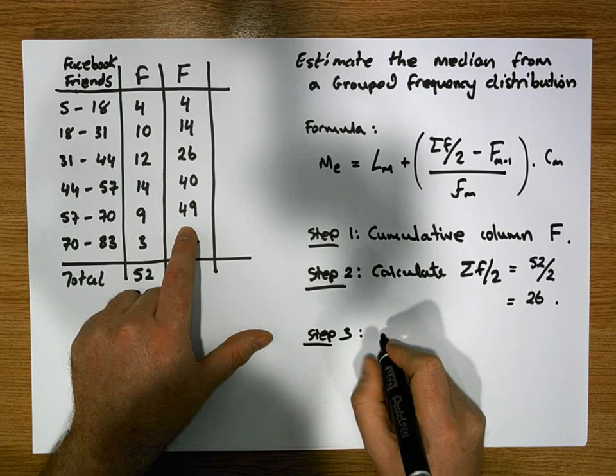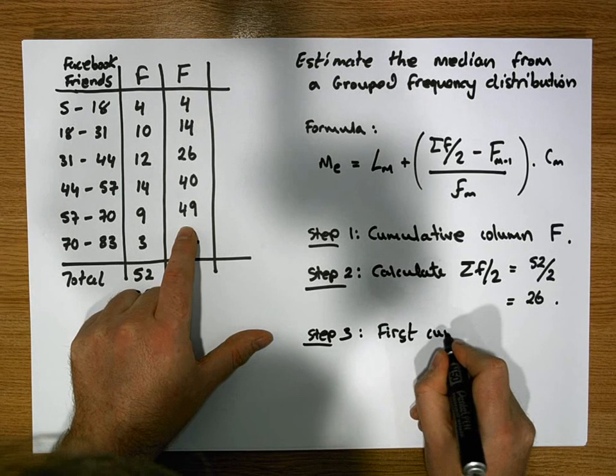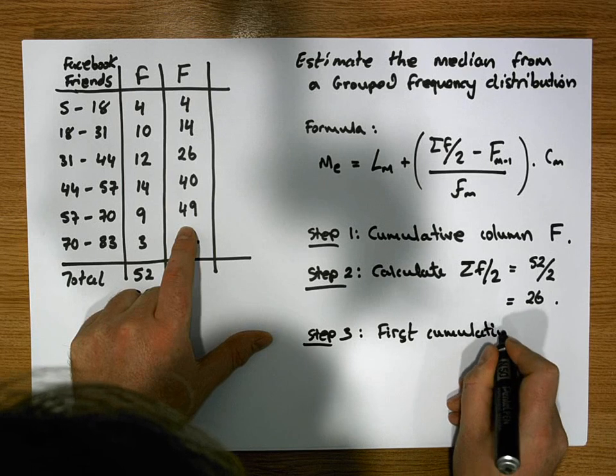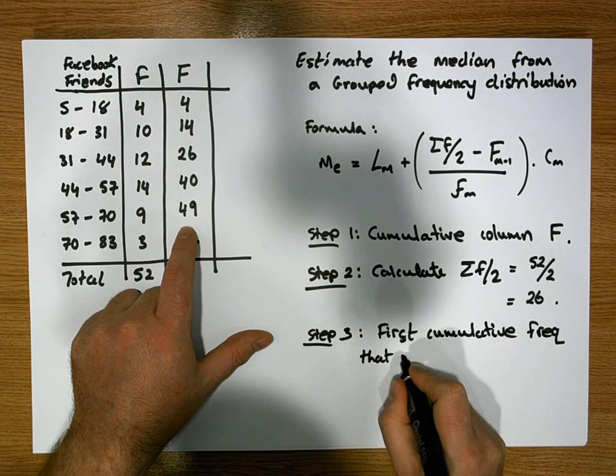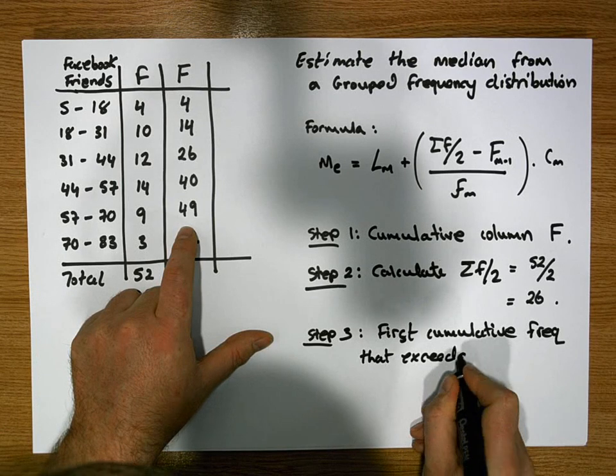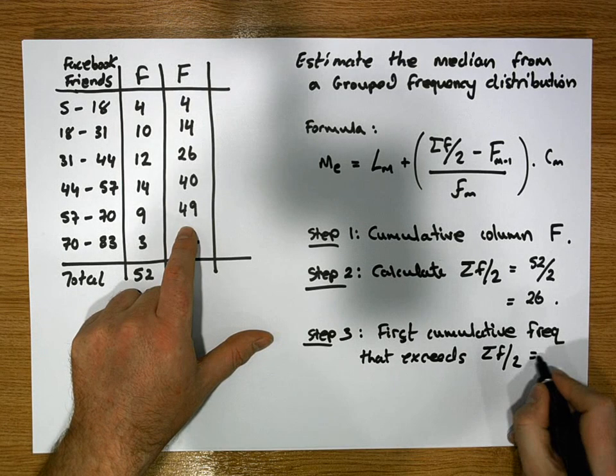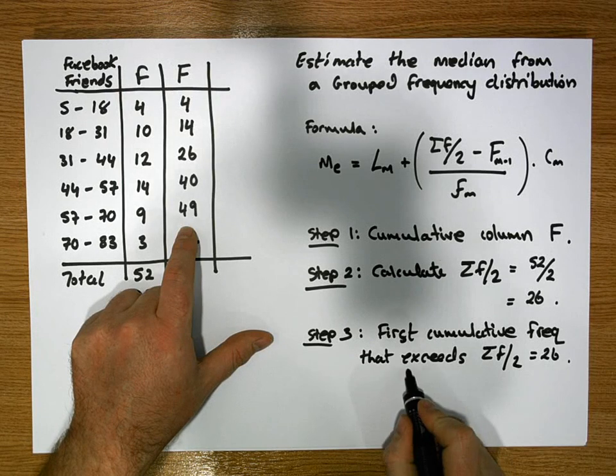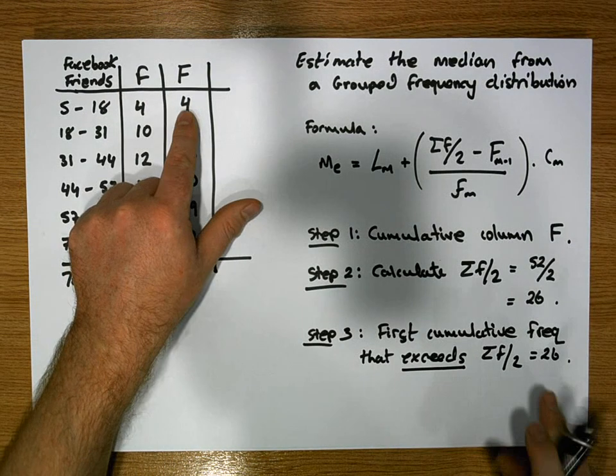Step three is to find the first cumulative frequency that exceeds sigma f over two, or that exceeds 26. It's important that it exceeds it.